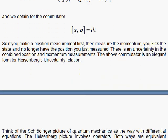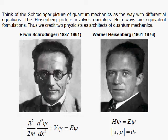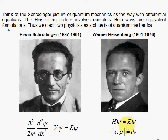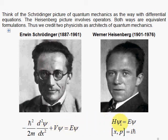Let's look at the architects of quantum mechanics: Schrödinger and Heisenberg. The Schrödinger picture of quantum mechanics is the one with differential equations — the Schrödinger equation, named after him. With Heisenberg, we think in terms of operators. Here I replace the left-hand side with the Hamiltonian acting on psi — this is an operator equation. These two operators do not commute. So the Schrödinger picture uses differential equations, and the Heisenberg picture uses operators. Both are equivalent formulations of quantum mechanics.